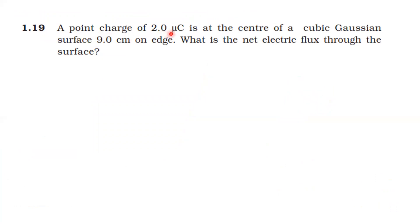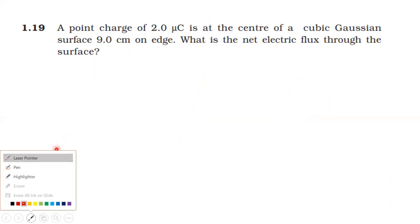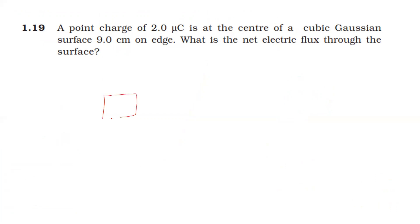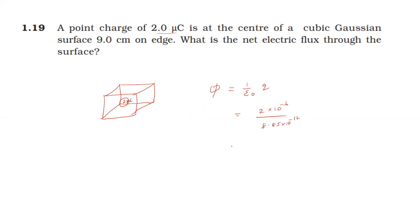A point charge of 2 μC is at the center of a cubic Gaussian surface of side 9 cm. The net electric flux through the surface is Φ = Q/ε₀ = 2×10⁻⁶ / (8.85×10⁻¹²) ≈ 2.2×10⁵ N·m²/C.